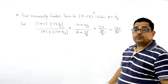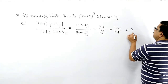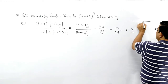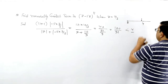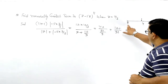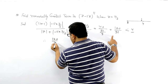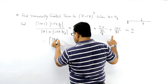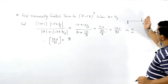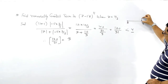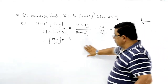It is less than 4. Number line पर देखें तो यहाँ 3 आता है, 4 आता है, और यह 4 से छोटा है। तो इसकी greatest integer value निकालेंगे — 3 आएगी। 120/31 की greatest integer value 3 है, क्योंकि यह 4 से थोड़ा सा छोटा था।